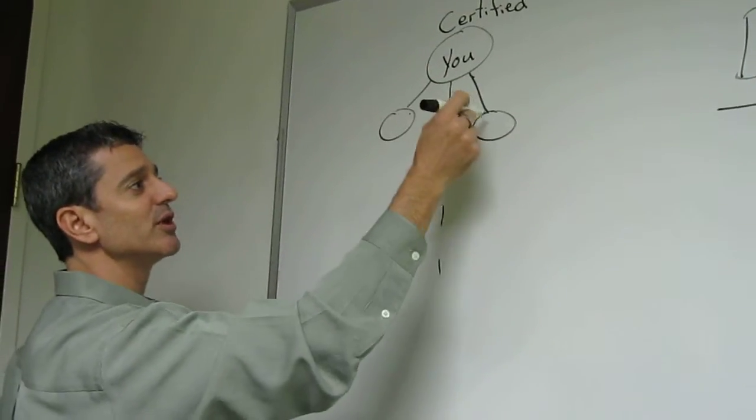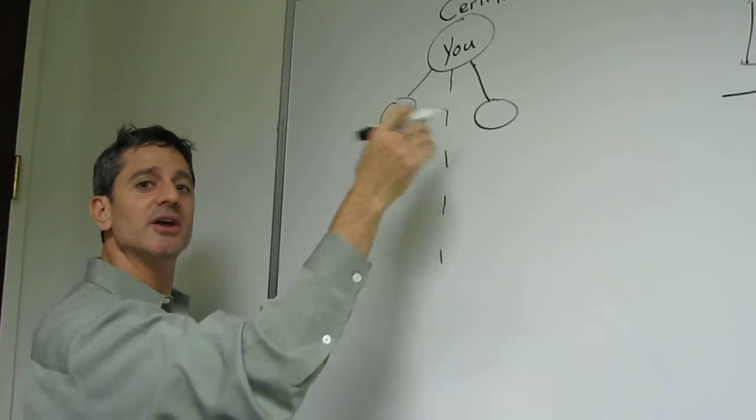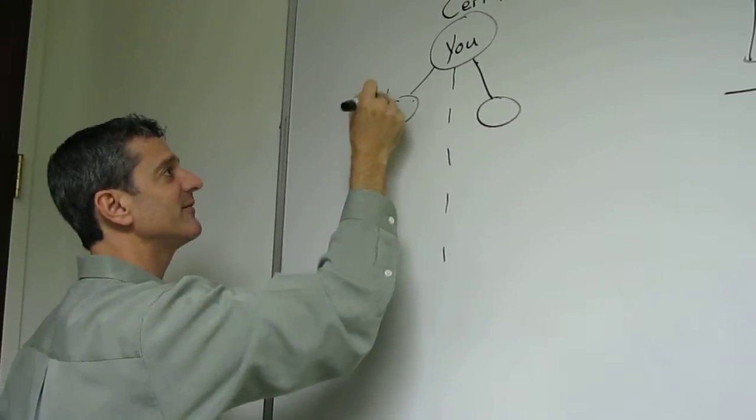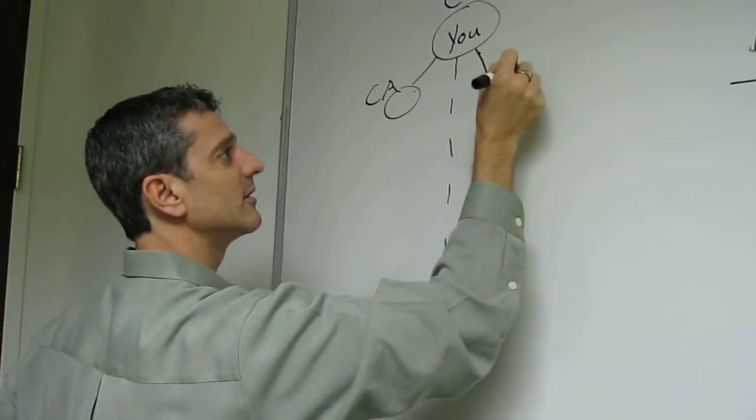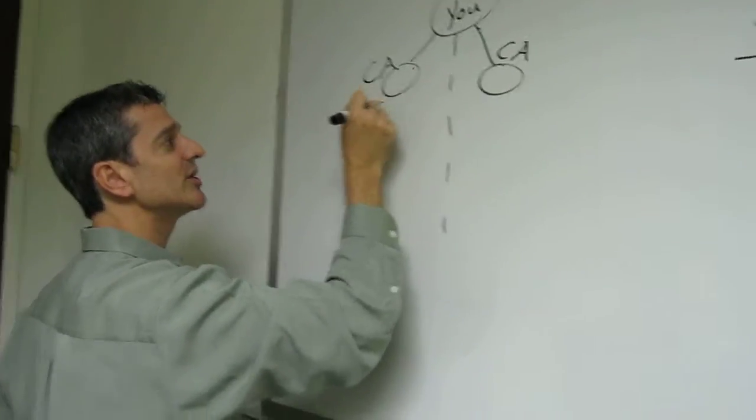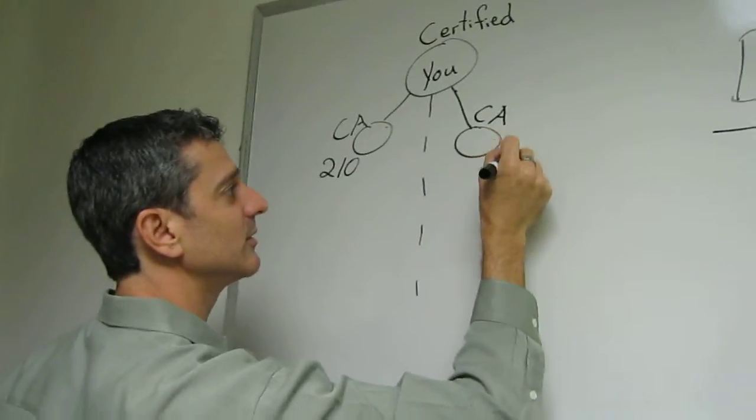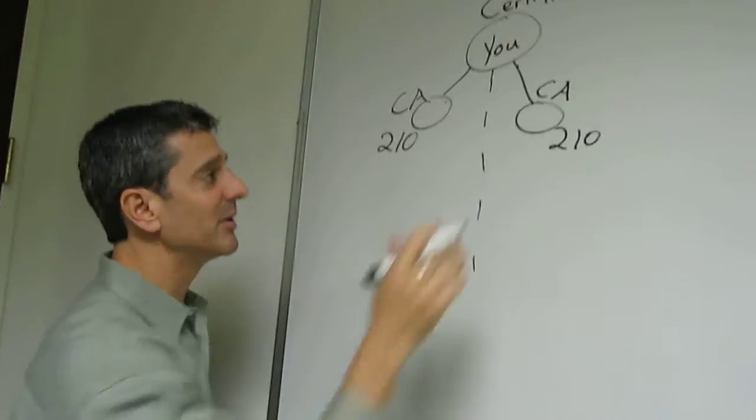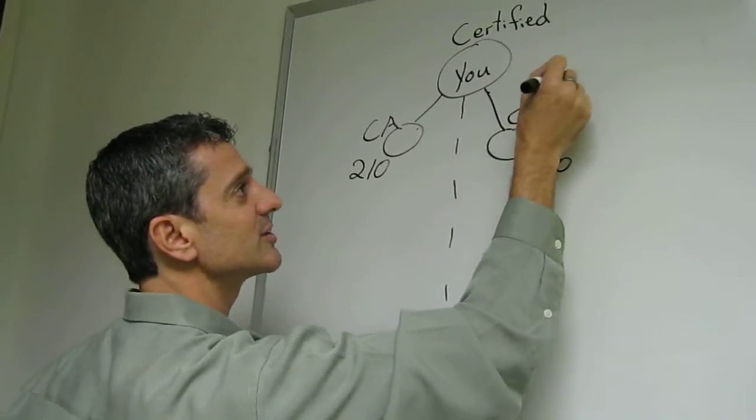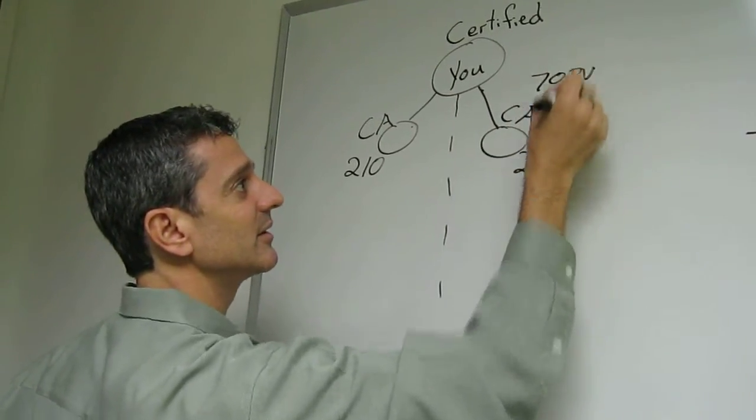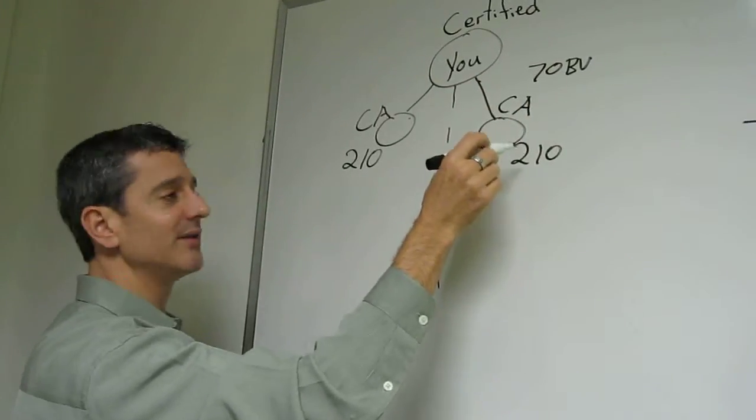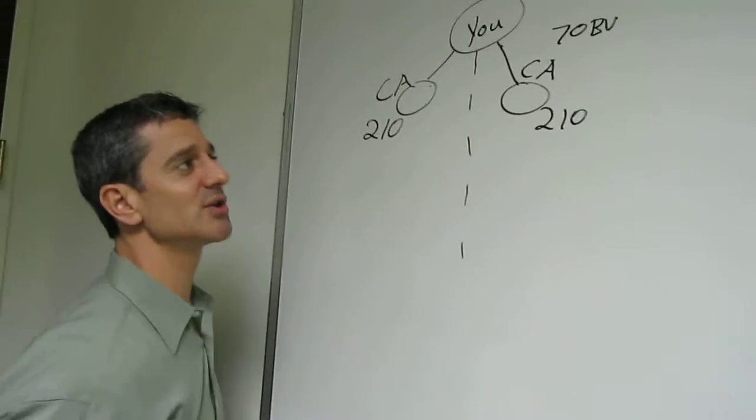The first two people that you sell a Shop Best membership to that come in, if they're certified affiliates, they're going to be worth 210 BV points to you. Why is that exciting? Because if they're a basic affiliate, they're worth 70 BV points. So it's triple BV points if the first two people come in as certified affiliates.